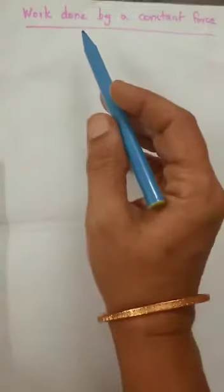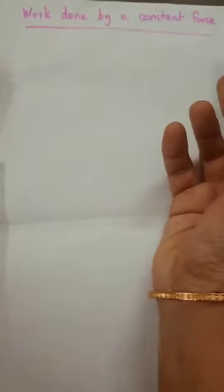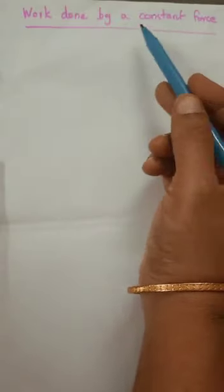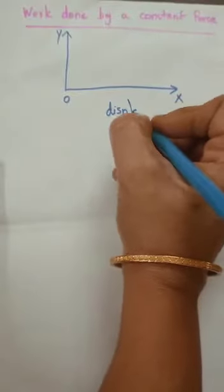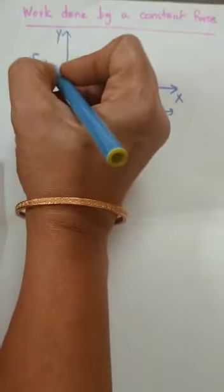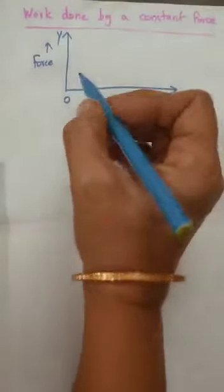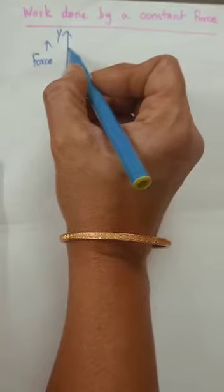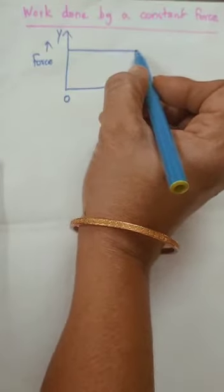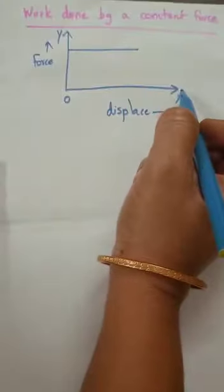We shall now discuss the work done by a constant force. Force acting is constant through a displacement x. If you draw a graph between displacement and force, displacement is plotted along the x-axis and force along the y-axis. Throughout the displacement, the constant force acting gives a straight line parallel to the x-axis in the graph.